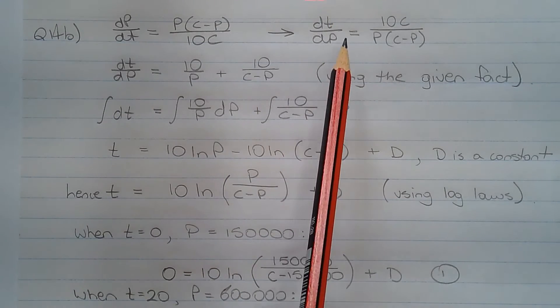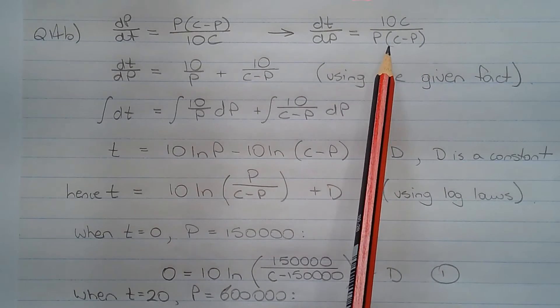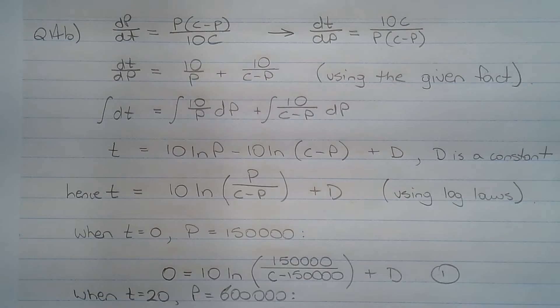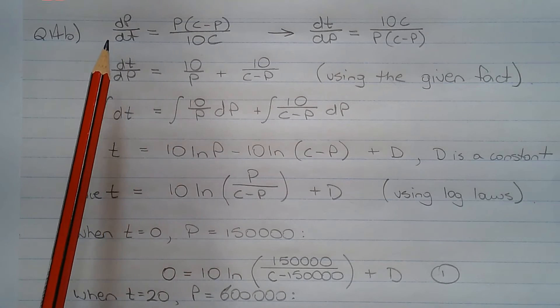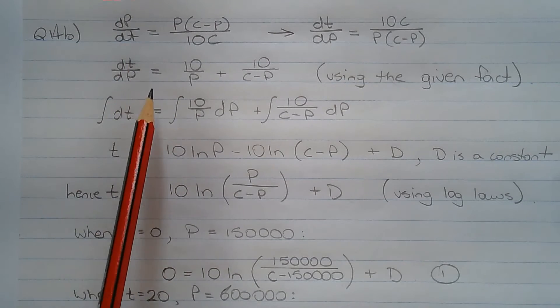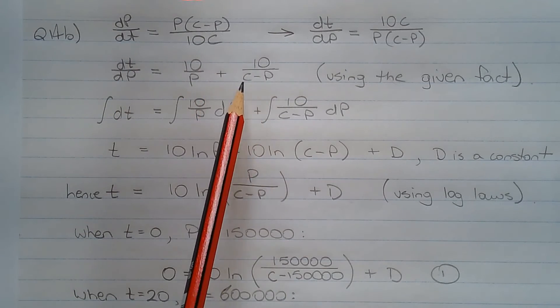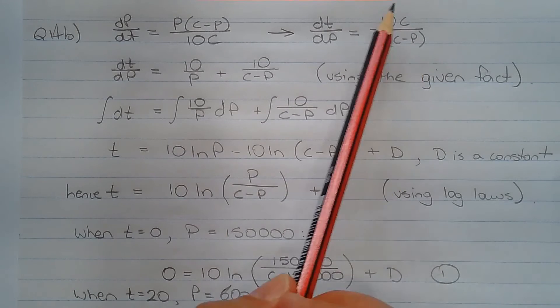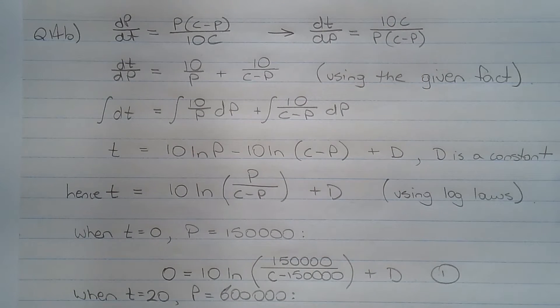The next step is to take the reciprocal of both sides. So we have dt/dp equals 10c over p(c minus p). And using the given fact in the question, we can express dt/dp as 10 over p plus 10 over (c minus p). So splitting this fraction up into a sum of two fractions.